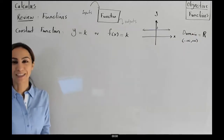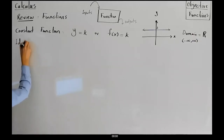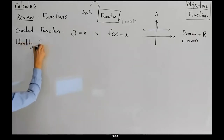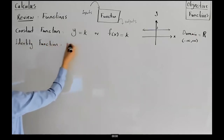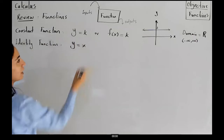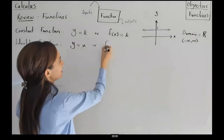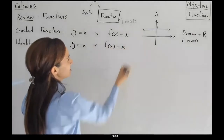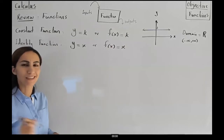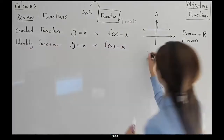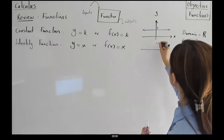Then we introduced the identity function, which is represented by Y equals to X, or F of X equals to X. For this function, whatever your X value is, your Y value is going to be the exact same value.